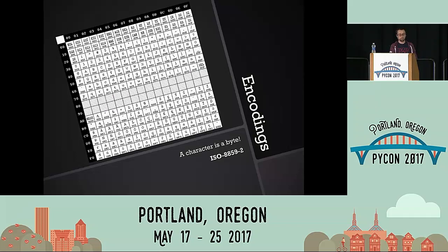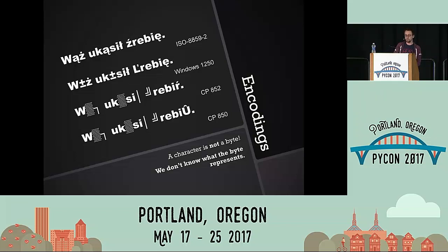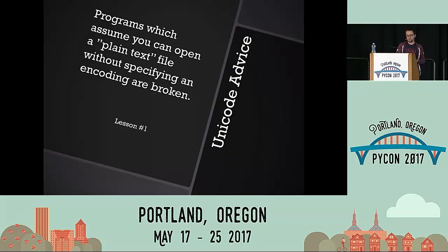There was a lot of confusion. ISO and Linux had their own code pages too. This is how the landscape looked for most of the 90s and early 21st century for people in Central Europe — the same content was very often mangled if you didn't know the encoding used to write the data. The first lesson: programs that assume you can open a plain text file and it will be okay are broken.